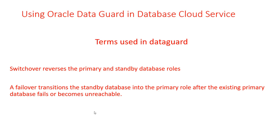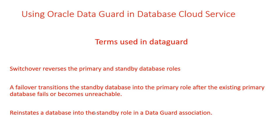Failover transitions the standby database into the primary role after the existing primary database fails or becomes unreachable. A failover might result in some data loss when using maximum performance protection mode, because in that mode the database does not wait for logs to be applied on the standby — this gains performance but risks some data loss. Reinstate puts a database back into a standby role in a Data Guard association. You can use the reinstate command to return a failed database to service after correcting the failure — once the standby has been made primary during failover, you fix the original primary and reinstate it.